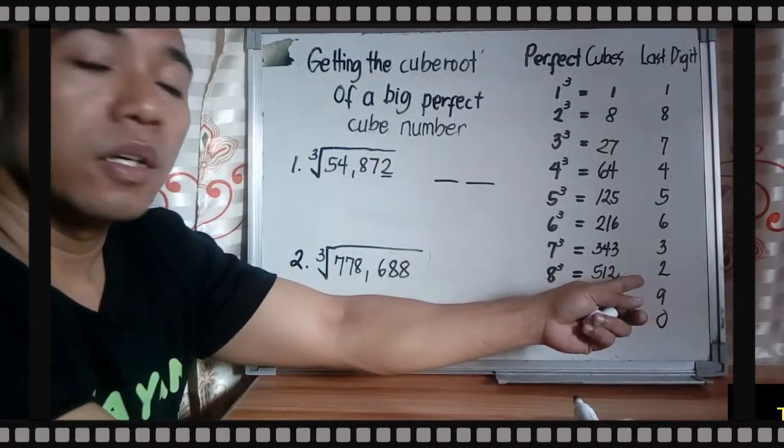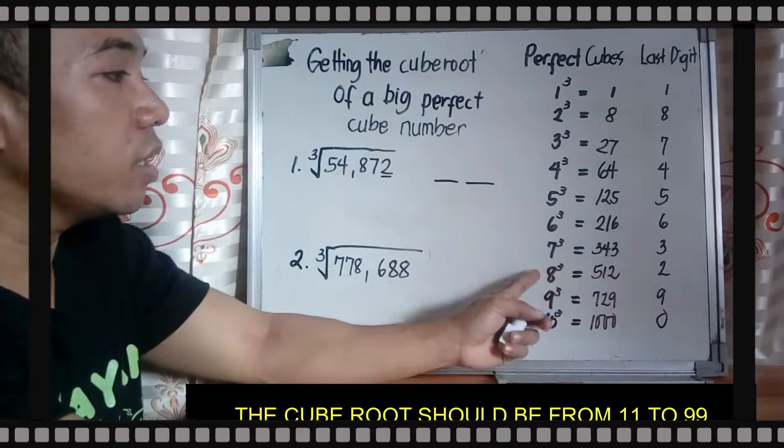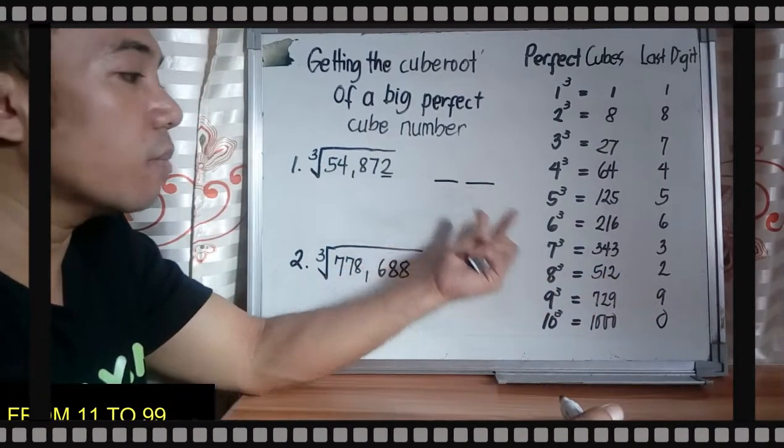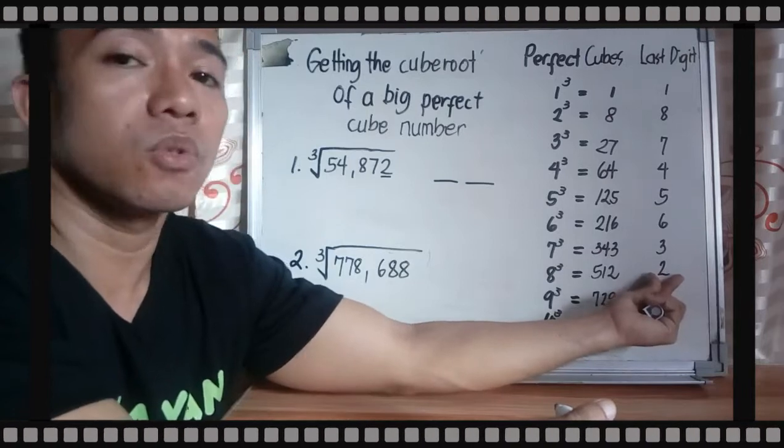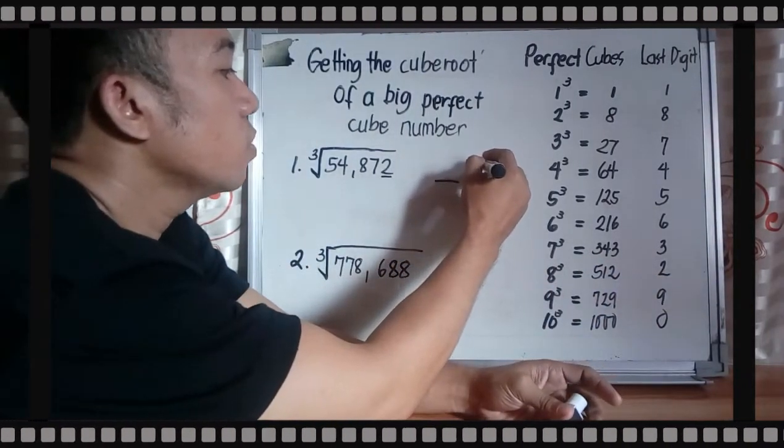Therefore, your unit digit for your two-digit number is 8, because your last digit is 2, so use 8.